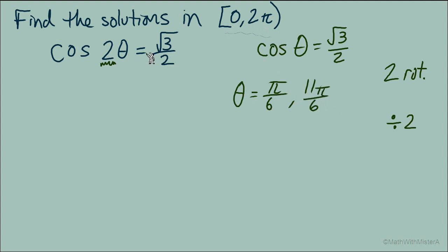Now again, because we had a coefficient of 2, we're going to find the next set of solutions for the second rotation on the unit circle. Or you could just think, let's add a full rotation of 2π radians to each of these solutions. That will give us 13π/6 and 23π/6.